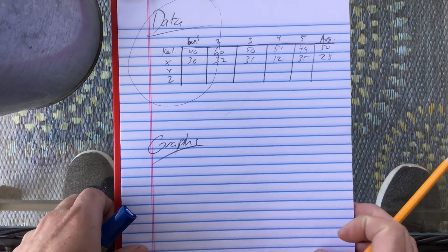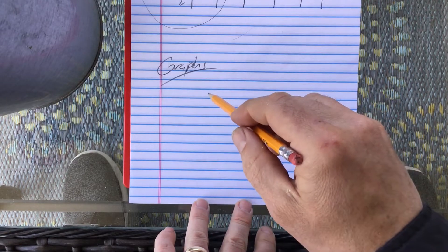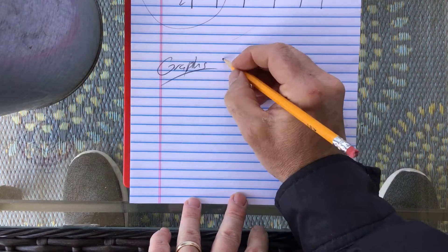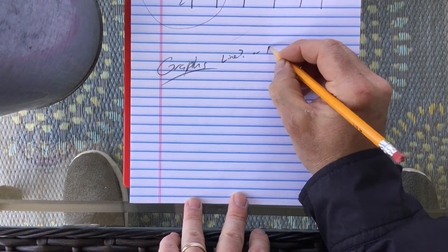Go ahead and keep that in so you kind of have two versions of your data. Then for the graph, we learned how to do graphs on Excel, and you've got to choose whether or not it's going to be a line graph or a bar graph.